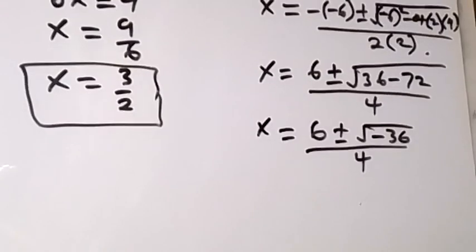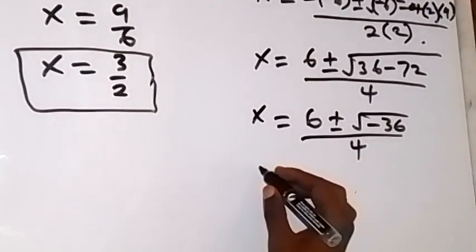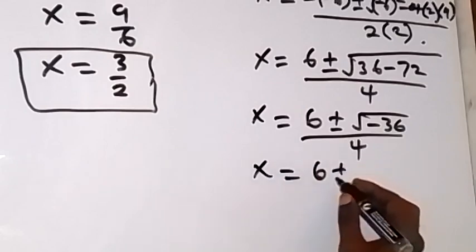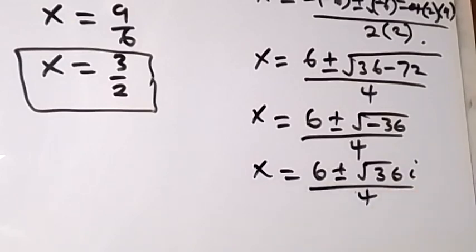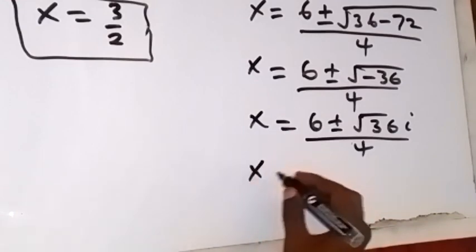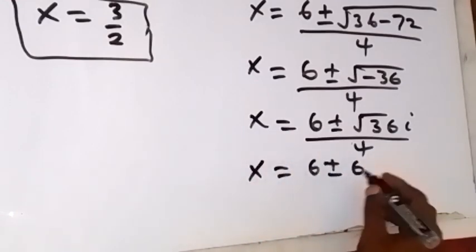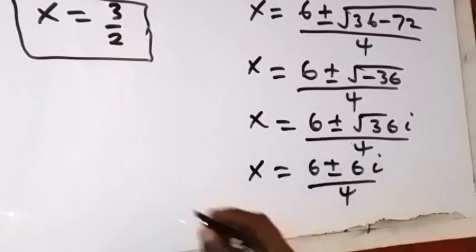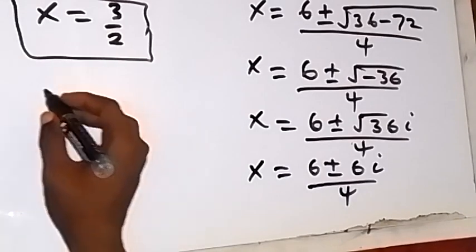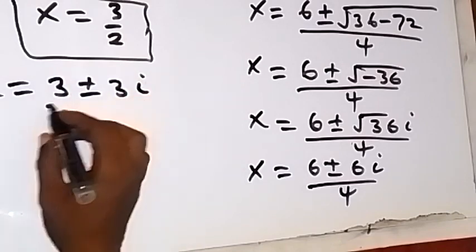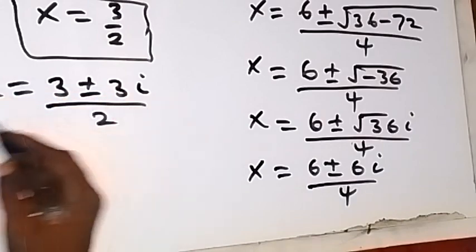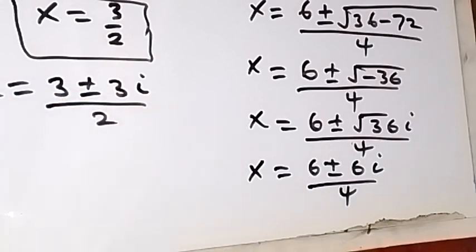Since we have minus 36 under the square root, we bring out the square root of minus 1, which is i. So x equals 6 plus or minus square root of 36 times i, all over 4. The square root of 36 is 6, giving x equals 6 plus or minus 6i over 4. Simplifying by dividing by 2, x equals 3 plus or minus 3i over 2. Thank you for joining us — don't forget to subscribe for more videos. See you in the next class!